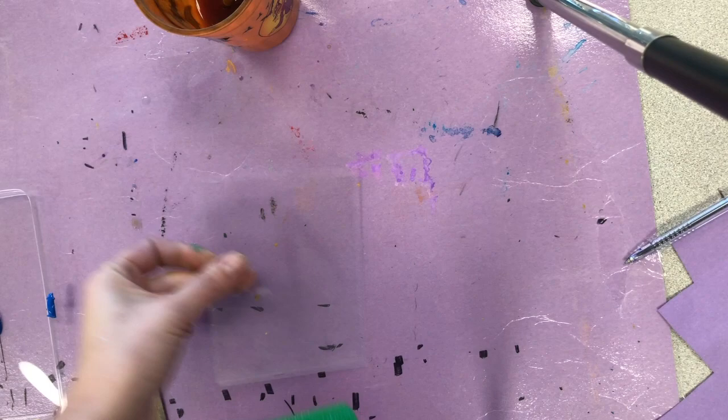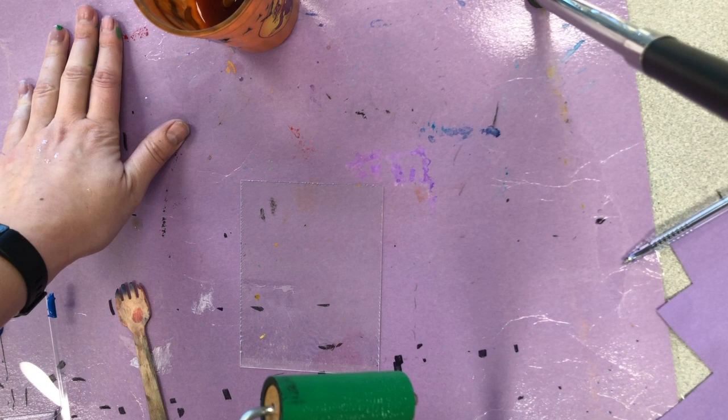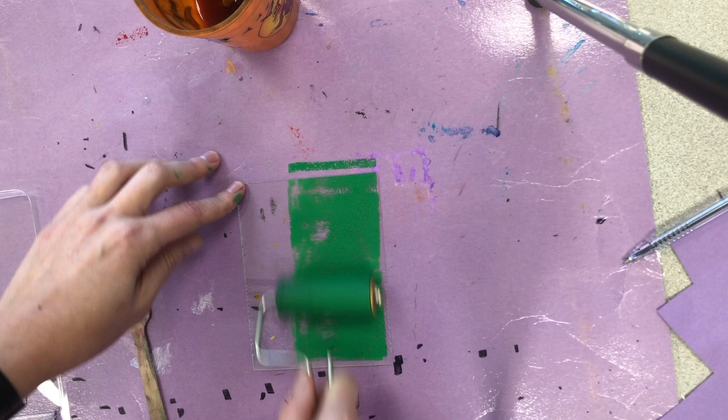Okay, so I'm going to get ink on my brayer and I'm going to put it on my piece of plastic to create a monoprint. You should have a mat underneath.